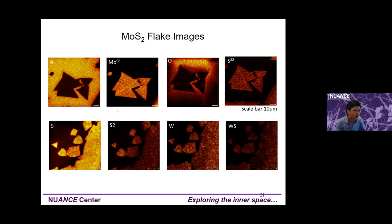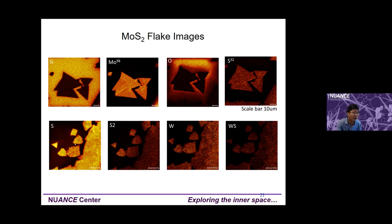Here is a mapping example of MoS2 flakes — monolayer MoS2 on a silicon surface. Bright means higher concentration. You can see the silicon mapping, the Mo mapping, the oxygen mapping, the S mapping, and the S2 mapping (S2 since sulfur is mass 32, S2 is 64). Using SIMS you can get a nice image of the monolayer distribution. EDX would struggle here because this is just a monolayer, and EDX goes deeper and is not very sensitive to light elements.